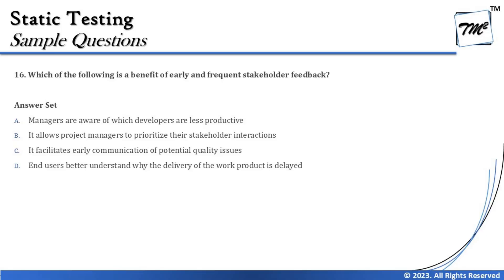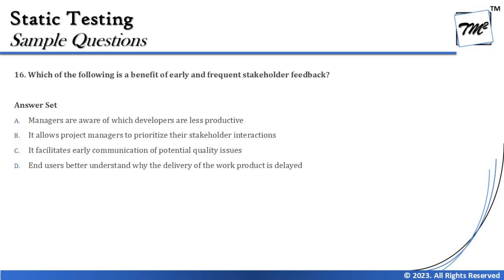Moving on to question number 16: which of the following is a benefit of early and frequent stakeholder feedback? We discuss sharing updates and implementations with the business through demonstrations in agile, confirming alignment to requirements. There's no point implementing something that doesn't meet the customer's expectations, so frequent feedback ensures we stay aligned to what is actually required.